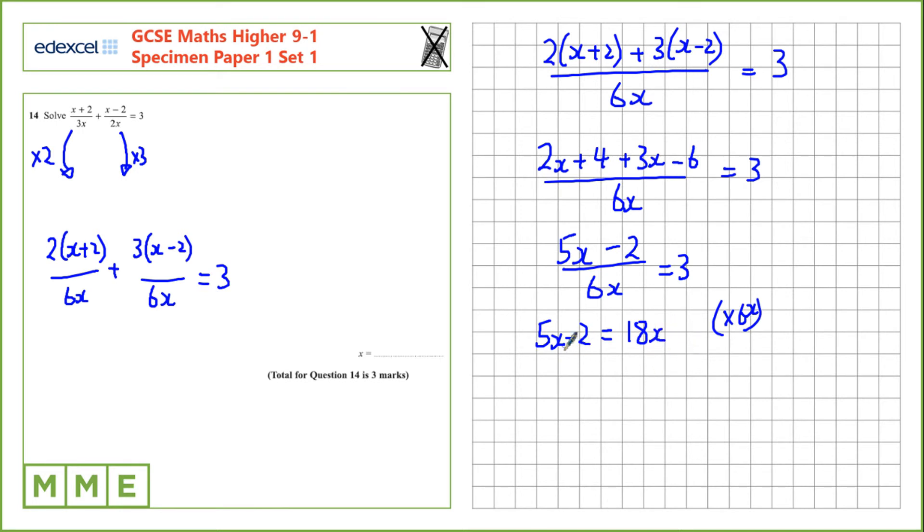And now, let's take 5x from both sides. On the left hand side, we're left with minus 2, and 18x take away 5x is 13x.